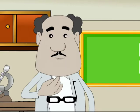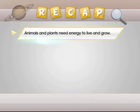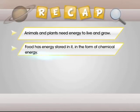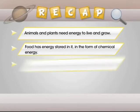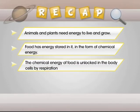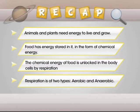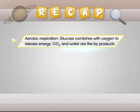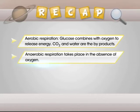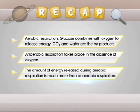Let's take a deep breath now and let's do the recap, Binny. In this module, you've learnt the following. Animals and plants need energy to live and grow. Food has energy stored in it in the form of chemical energy. The chemical energy of food is unlocked in the body cells by respiration. Respiration is of two types, aerobic and anaerobic. In aerobic respiration, glucose combines with oxygen to release energy. Carbon dioxide and water are the byproducts. Anaerobic respiration takes place in the absence of oxygen. In this, glucose is partially broken down and lactic acid is produced. The amount of energy released during aerobic respiration is much more than that released during anaerobic respiration.